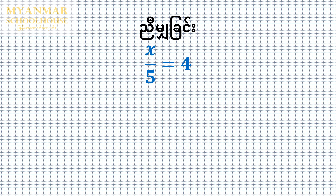The next equation is x over 5 is equal to 4.